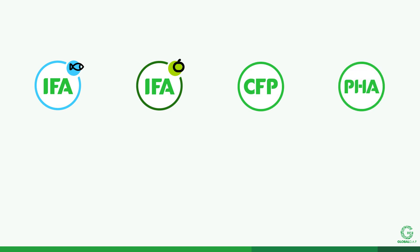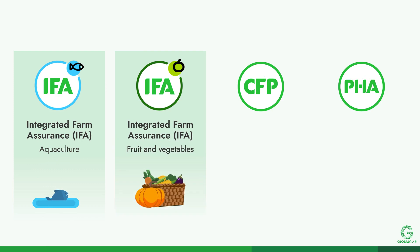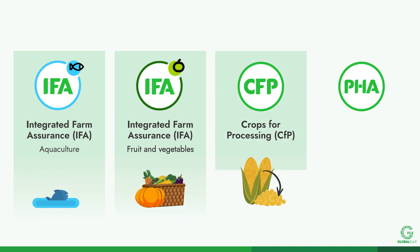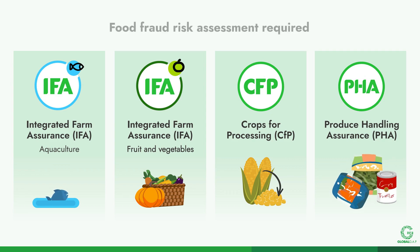Global GAAP standards relating to food, such as Integrated Farm Assurance for Aquaculture, IFA for Fruit and Vegetables, Crops for Processing, and Produce Handling Assurance, call for a food fraud risk assessment.